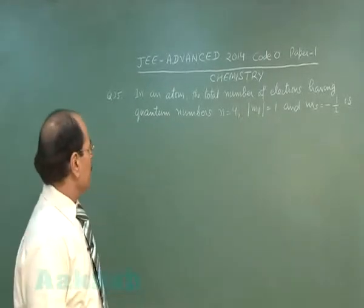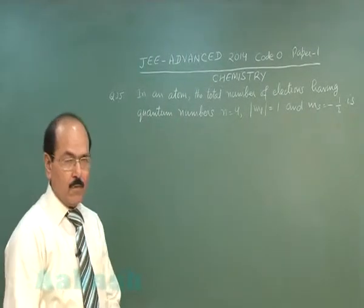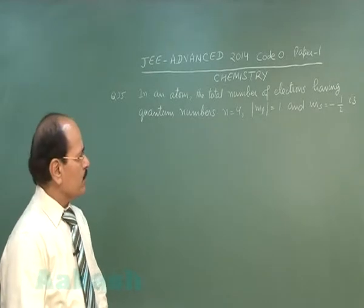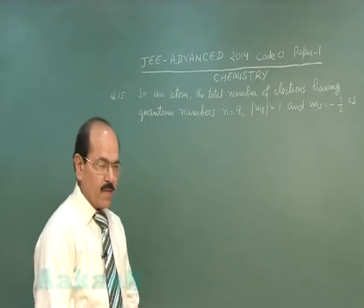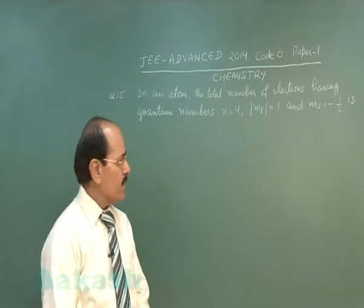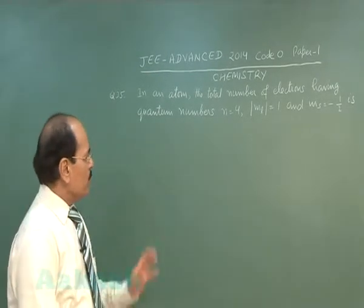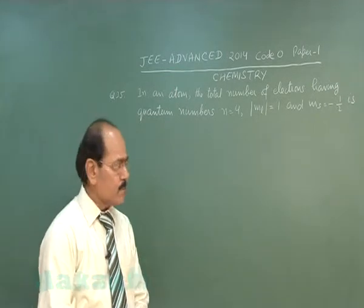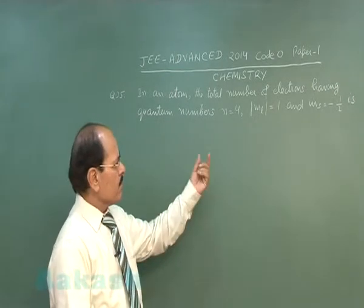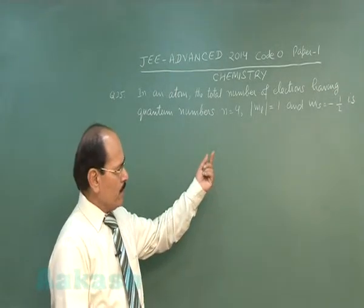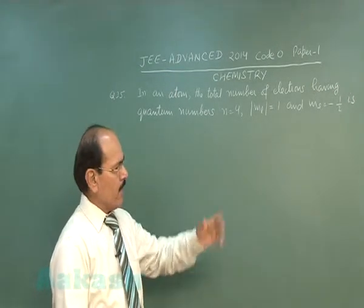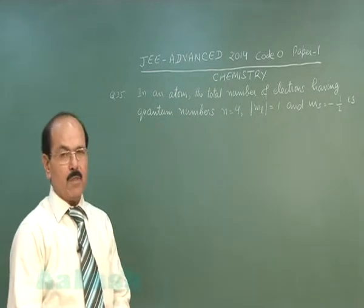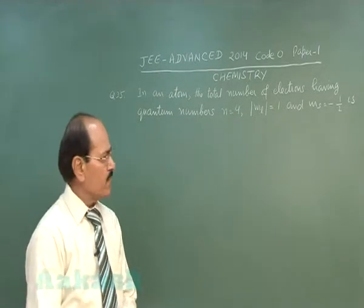Question number 35 of the paper reads: in an atom, the total number of electrons having quantum numbers n equal to 4, mod ml equal to 1, and spin quantum number minus half is?